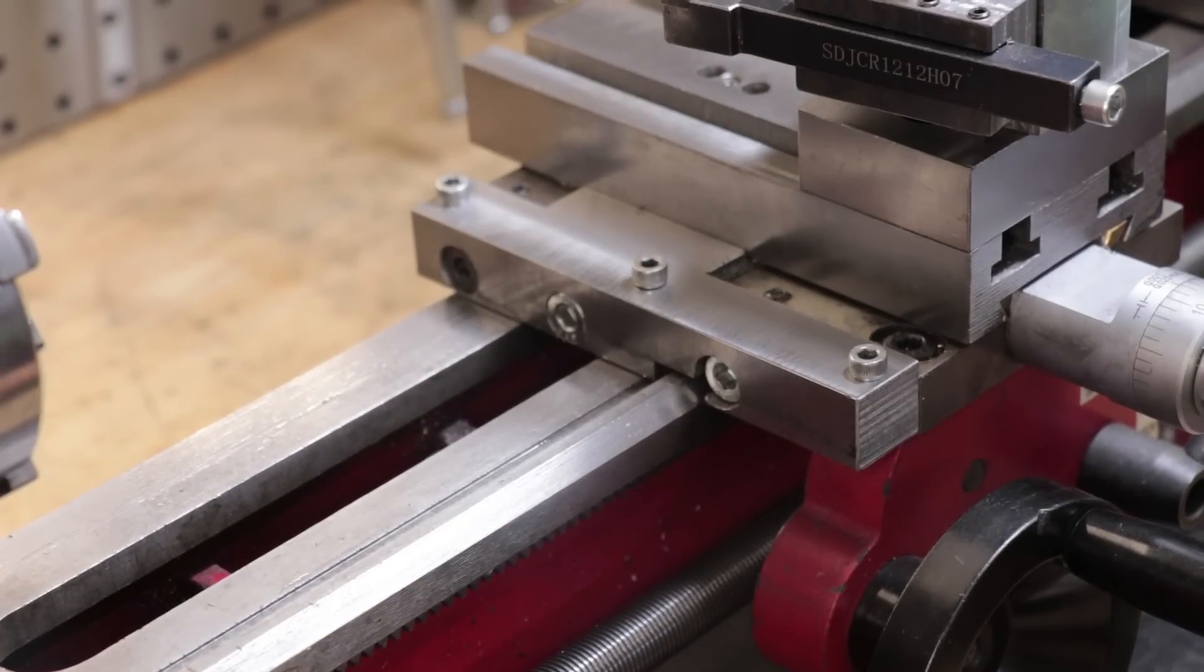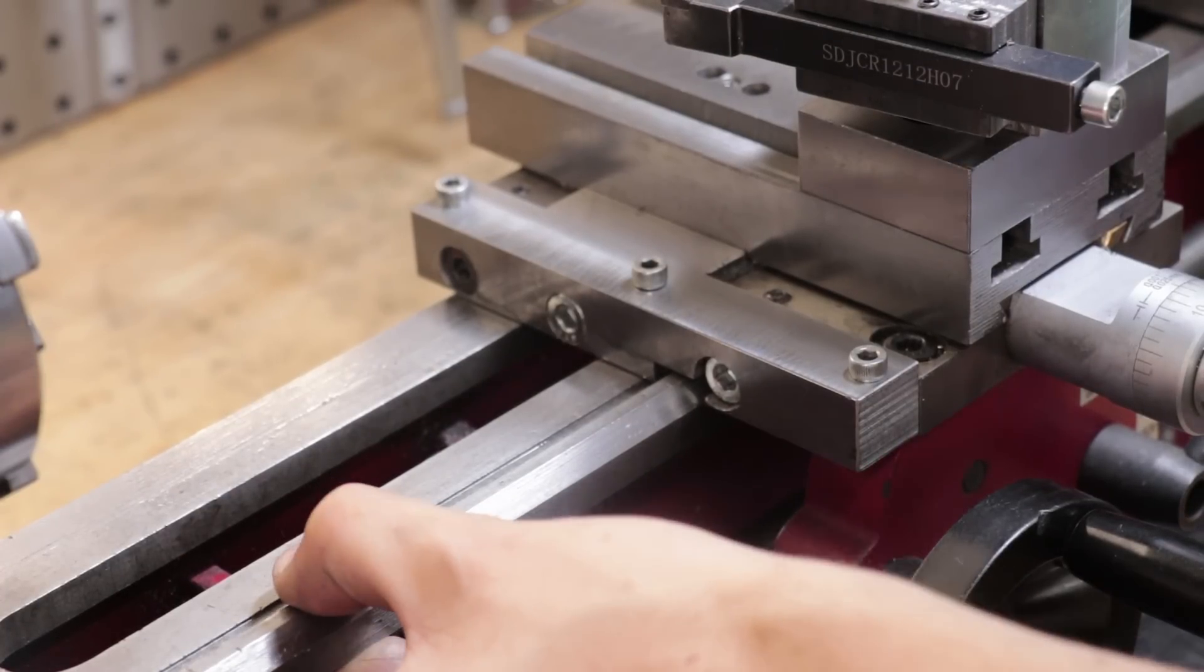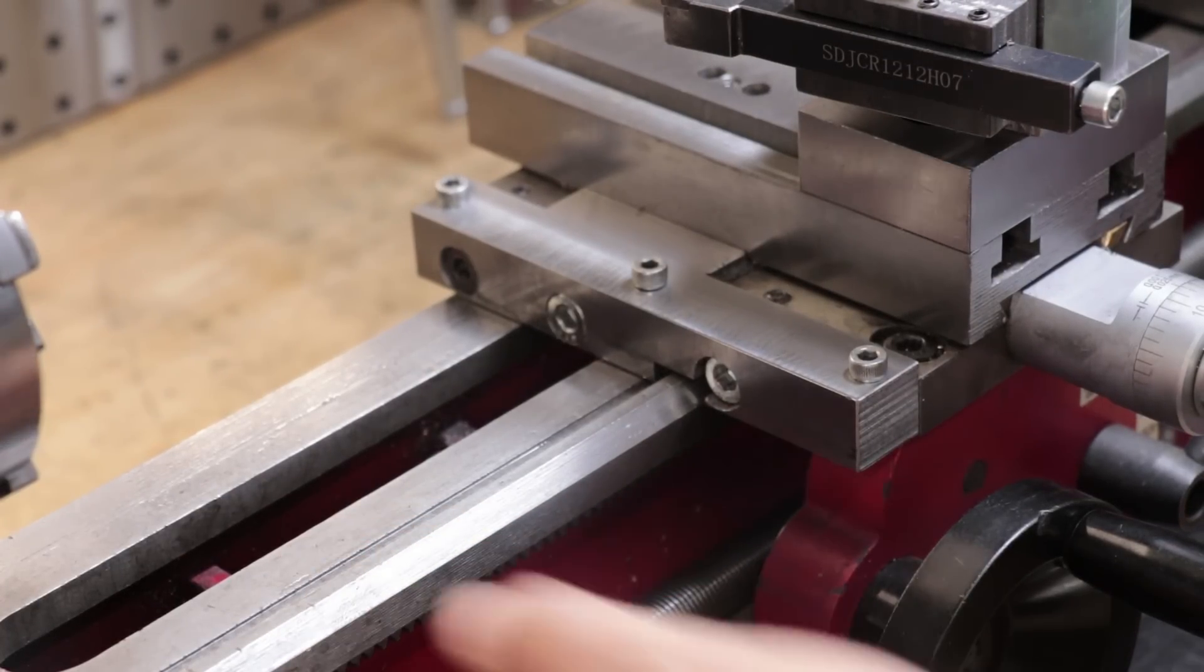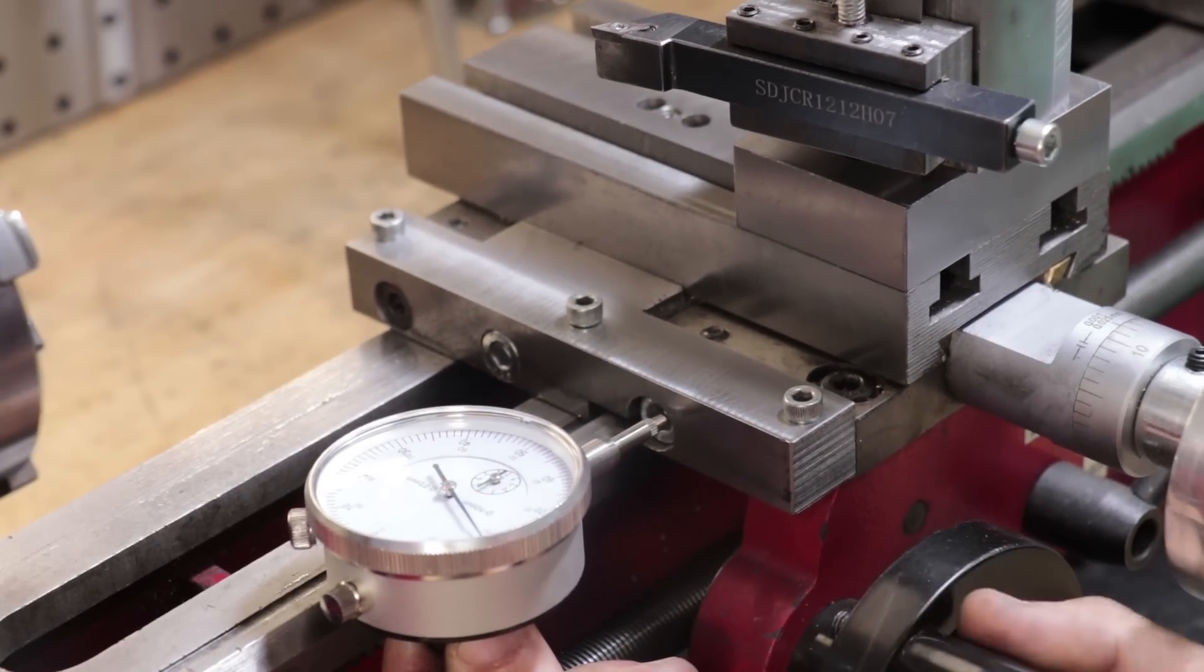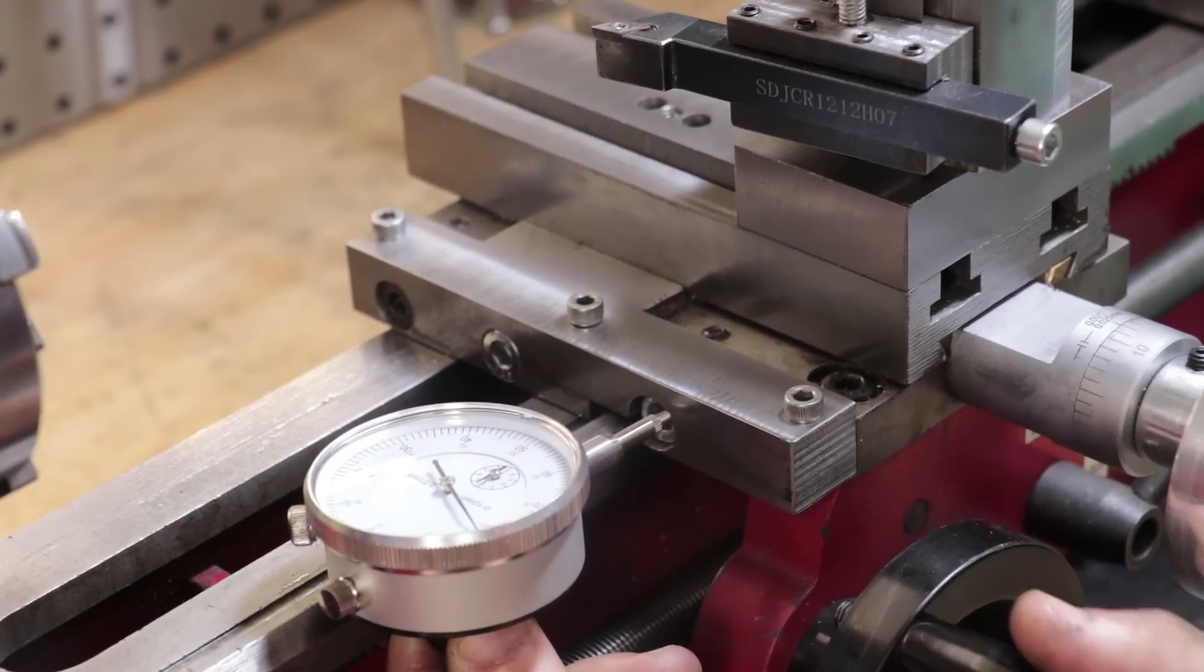Now the overall design does not need to be too complicated. It just needs to be a block of metal that can hold an indicator and it somehow needs to clamp to the ways and hold it pretty rigidly in place.